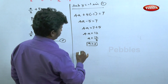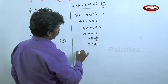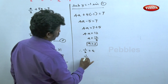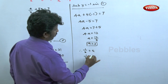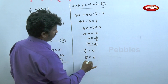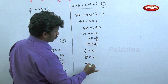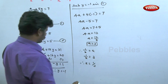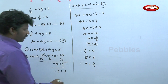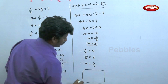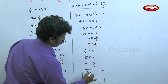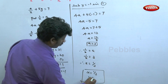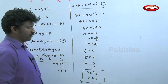Since 1 by x is equal to a, and a equals 3, therefore 1 by x is equal to 3, which gives x is equal to 1 by 3. Therefore the answer is x is equal to 1 by 3, y is equal to minus 1.